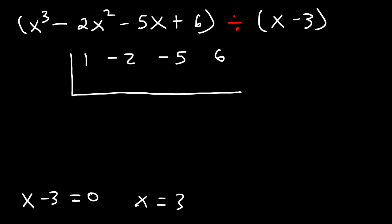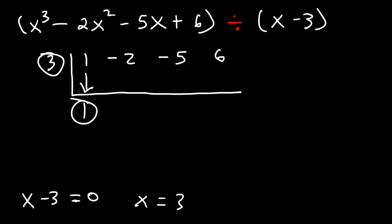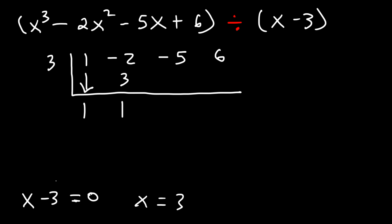That's one of the zeros of the function — at least sometimes it's a zero. Basically, if you see minus 3, reverse it. So in this case we're going to use positive 3. Let's bring down the 1. 3 times 1 is 3. Negative 2 plus 3 is 1. And then multiply — 3 times 1 is 3. And then add.